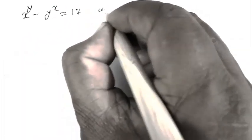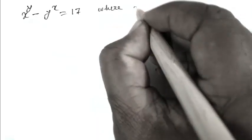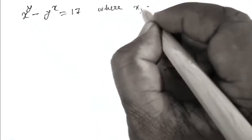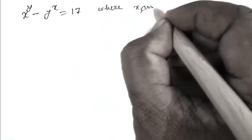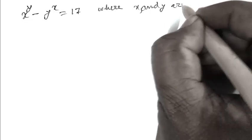Hello friend, welcome to my channel Quest for a Lesson. Today I am solving an algebraic equation: x to the power y minus y to the power x equals 17, where x and y are real numbers.